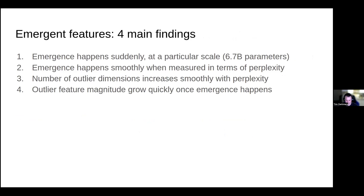We have four main findings in our paper. The first two concern how emergence happens — does it happen suddenly or is it a smooth transition? The third is supporting evidence for the view that emergence is smooth. The fourth is the main finding for quantization: it shows that once emergence happens, outliers grow very rapidly and basically destroy quantization. As we saw in the quantization example, adding an outlier increases the error a lot, and adding much larger outliers causes quantization to produce just noise with no information.